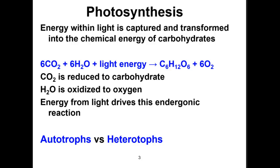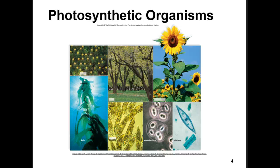Autotrophs are organisms that synthesize their own macromolecules, usually from sunlight — plants would be autotrophs. Heterotrophs are organisms that gain energy from eating other organisms; we would be an example of heterotrophs. This slide shows examples of several photosynthetic organisms such as flowers, trees, kelp, algae, and certain organisms in the Protista kingdom and some bacteria.